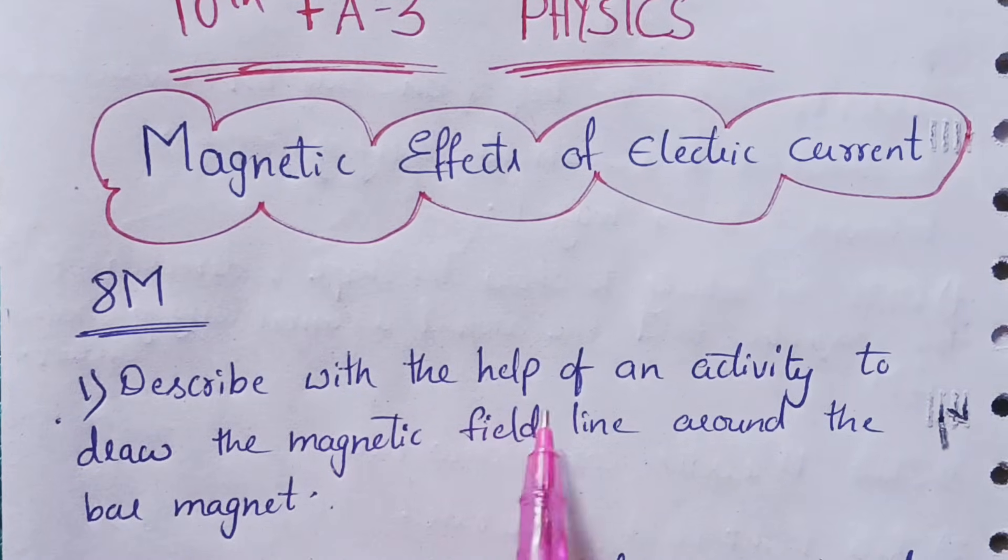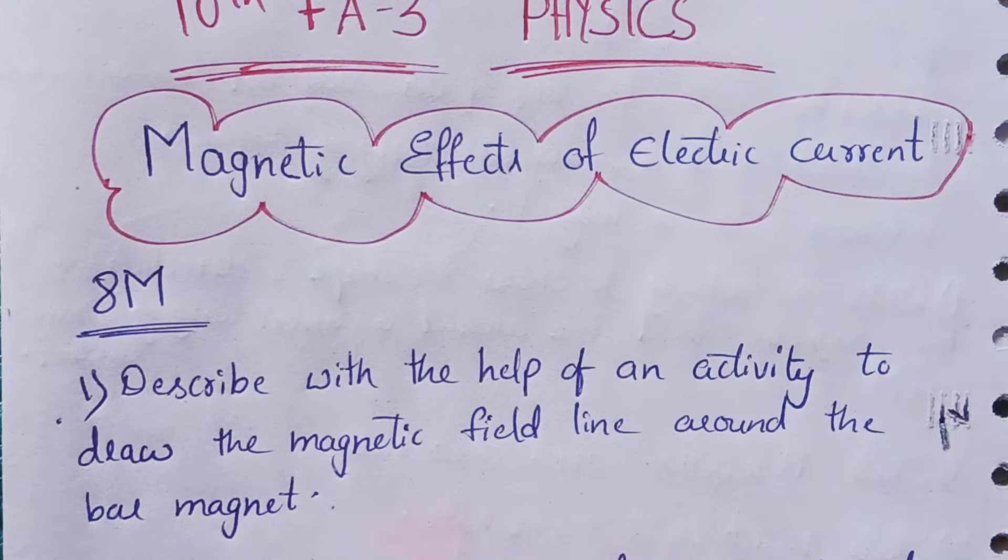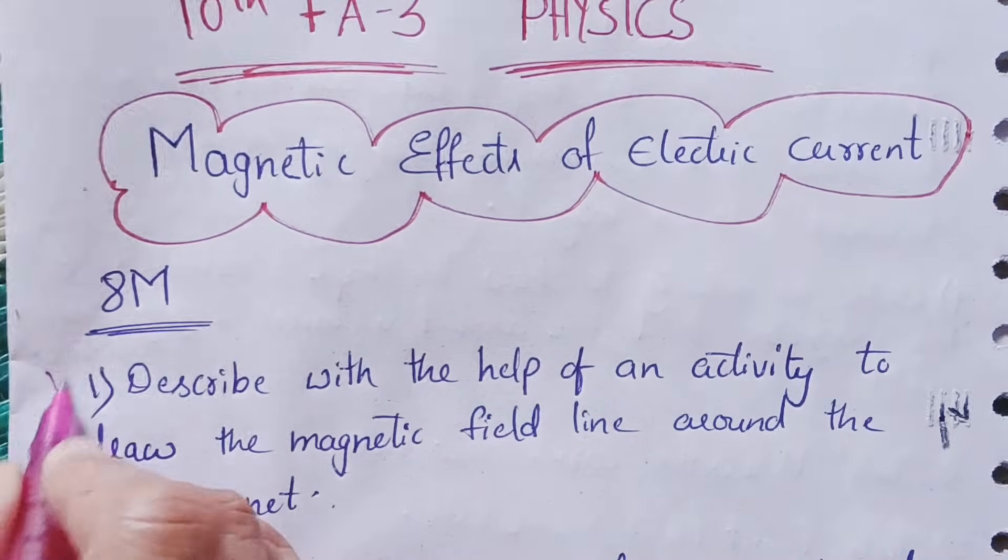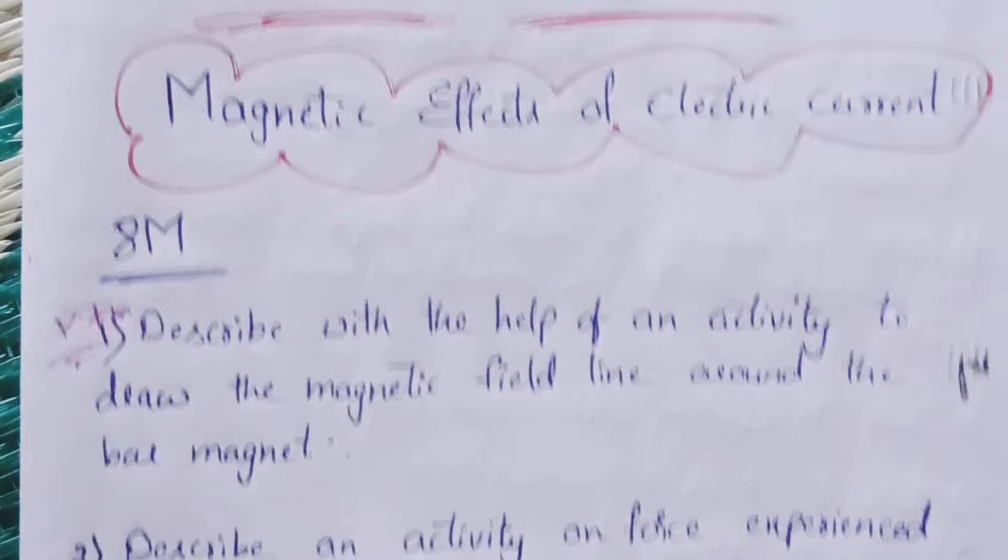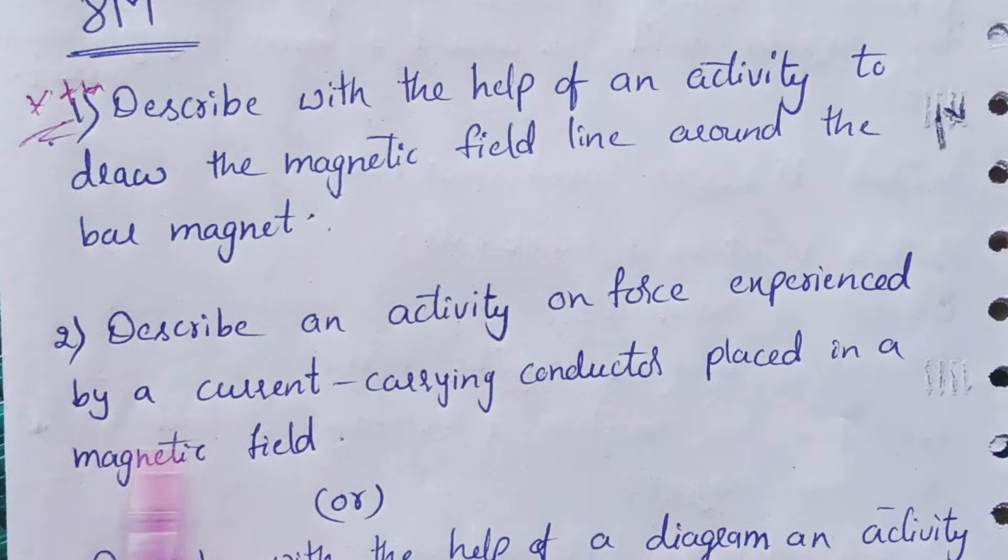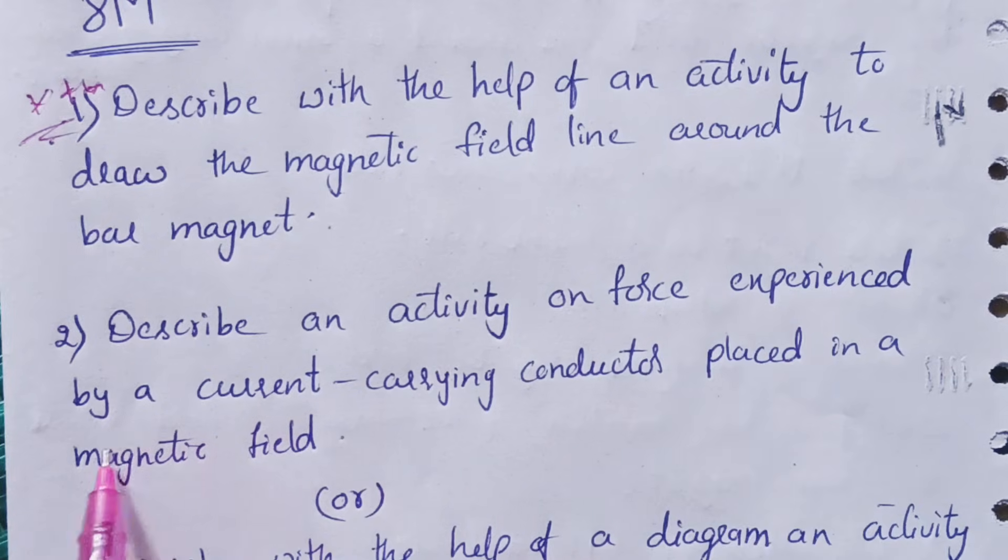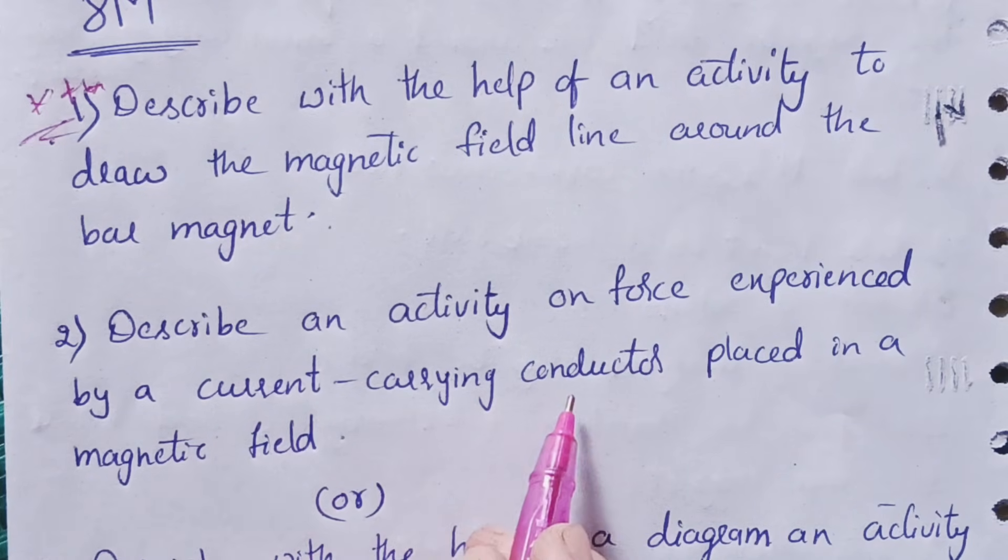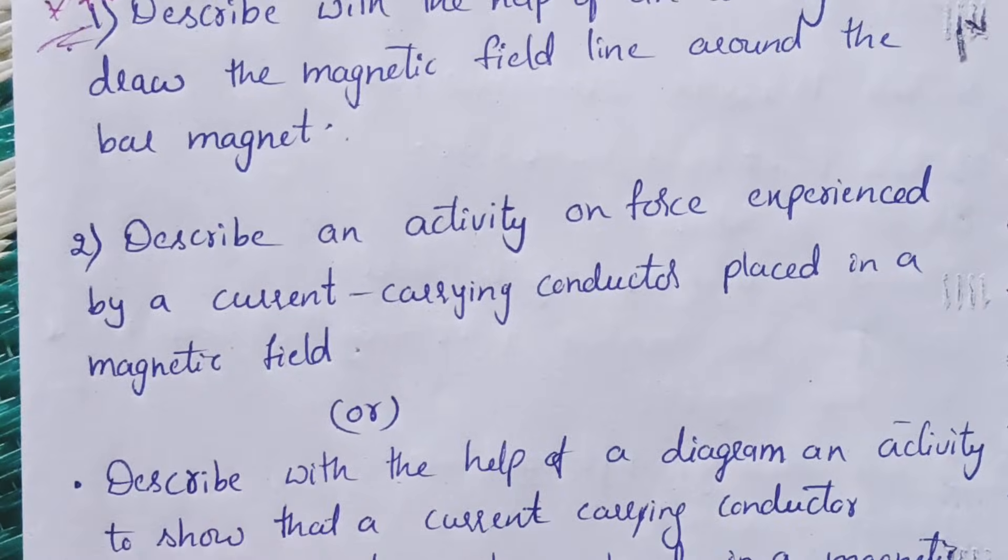The first 8 marks question from our chapter is: describe with the help of an activity to draw the magnetic field lines around the bar magnet. This is a most important question, please mark it important.